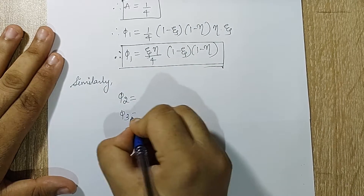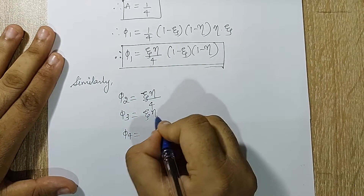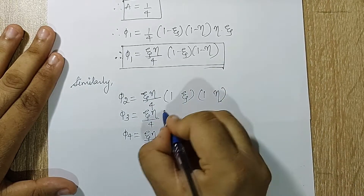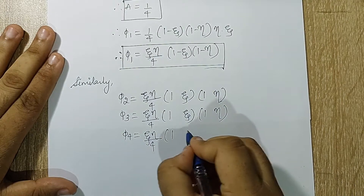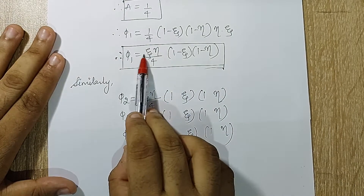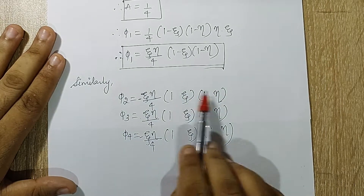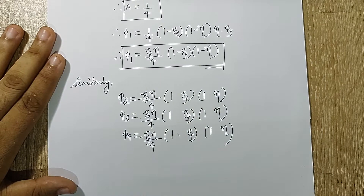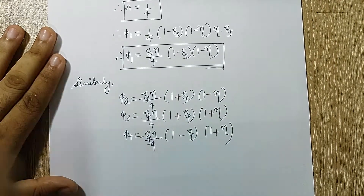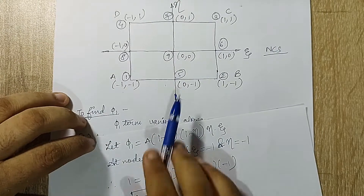When I have three terms I write ζη/4 for all of them, then two brackets with relations of (1 ± ζ) and (1 ± η). The signs appear positive-negative alternately. For the bracket signs I take them from the vertex coordinates: node one is (−,−) giving plus signs, node two is (+,−), node three is (+,+), and node four is (−,+). This is how you write φ₂, φ₃, and φ₄.